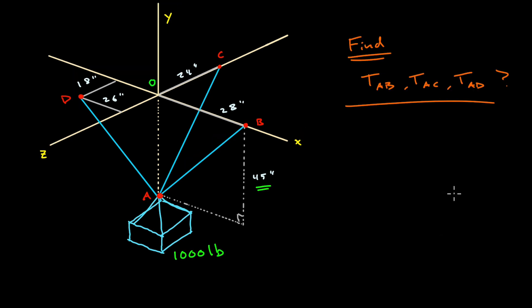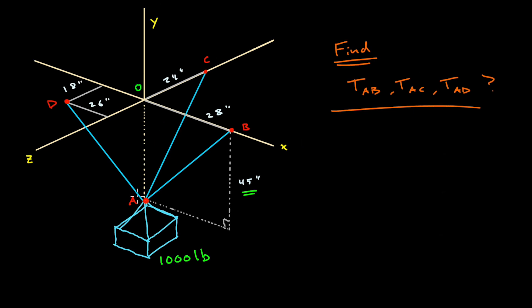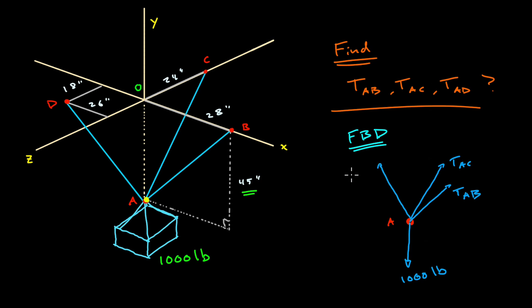The trick to solving this problem is to recognize that this is a particle equilibrium problem in three dimensions, which means we want to analyze the forces at a particular point in space. The natural point to consider in this problem would be point A because that's the point at which all three cables and the supported load meet. So naturally the next thing we'd want to do is to consider the forces at point A. All of these forces are vectors, so we want to make sure we denote those, and we'll consider the thousand pound force — we'll call it W.